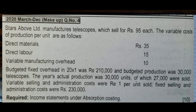Let's see the question. The above limited company manufactures telescopes with sales price of Rs.95 each. The variable cost of production per unit are: direct material Rs.35, direct labor Rs.15, and variable manufacturing overhead Rs.10. These are the variable manufacturing costs.